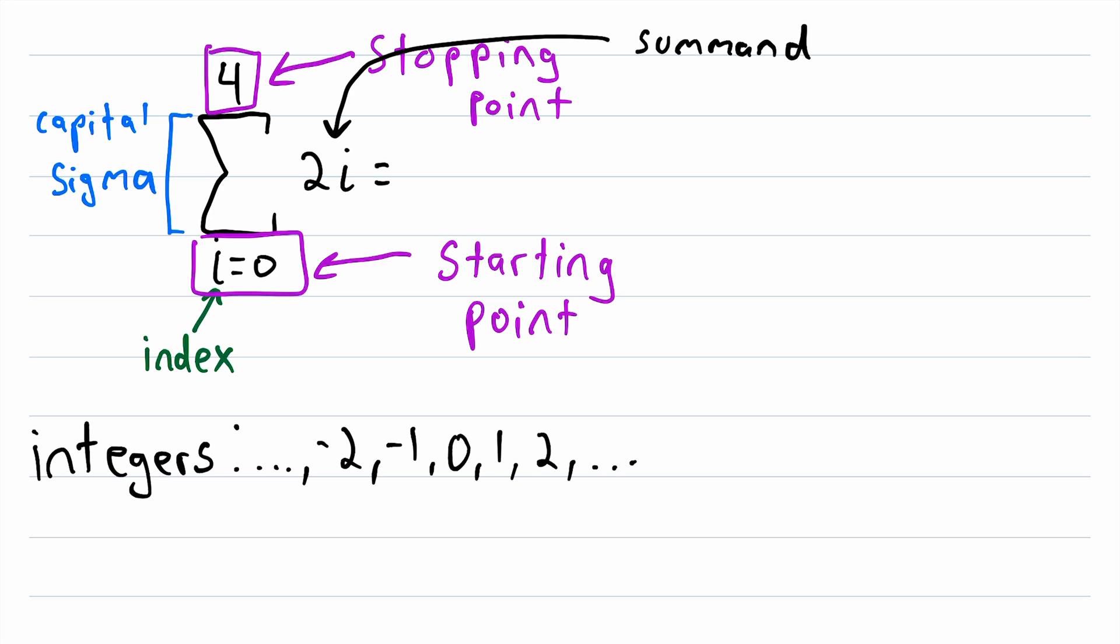So let's write this out to try to clarify exactly what is meant by this sum. Remember, we start at i equals zero, so the first term of our sum is two times i, where i is zero, that's two times zero. Then, we just have to increment i up by one, and add again, two times i. i is one, so we have two times one.